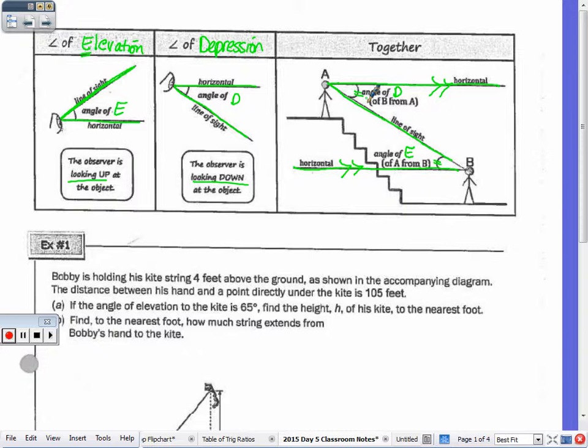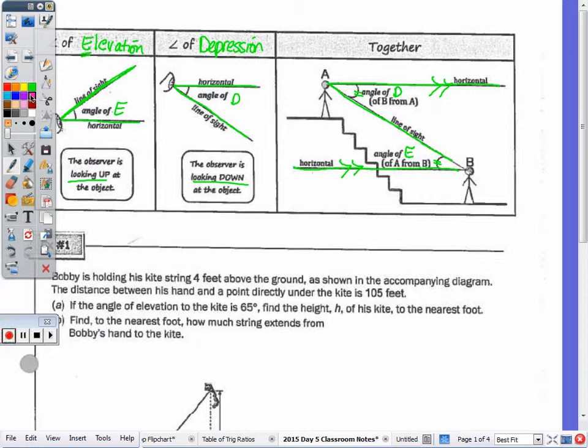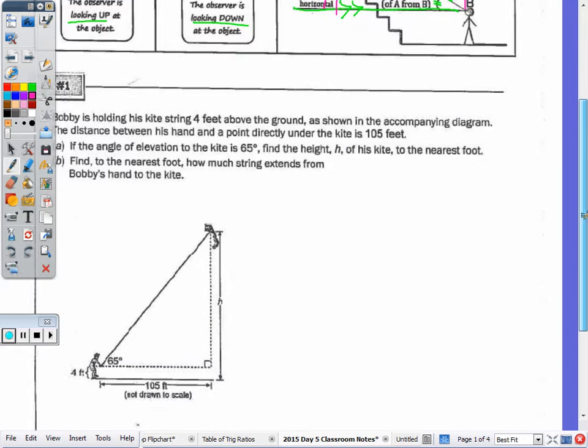So when you're doing these questions, you can form one right triangle, right here, because we draw a vertical line to form a 90-degree angle. You can look at this right triangle, or you can look at this right triangle. So there's more than one triangle you can look at in each picture. So let's take a look at question one.